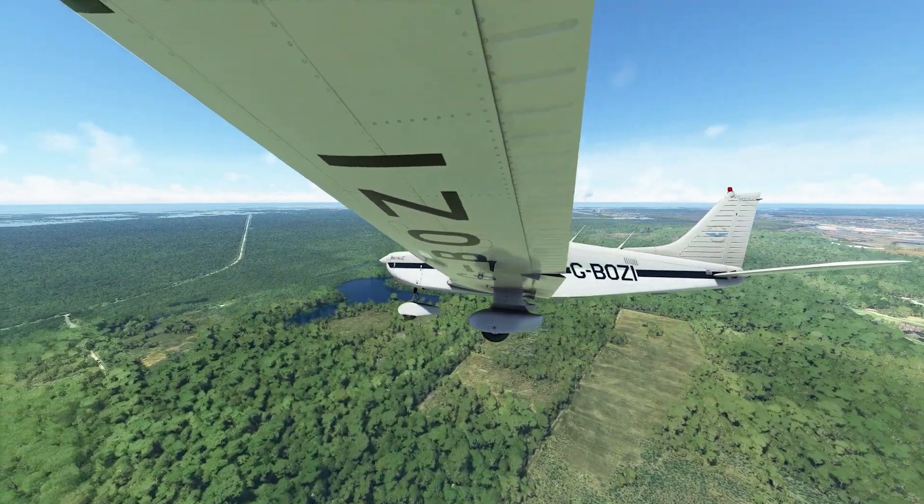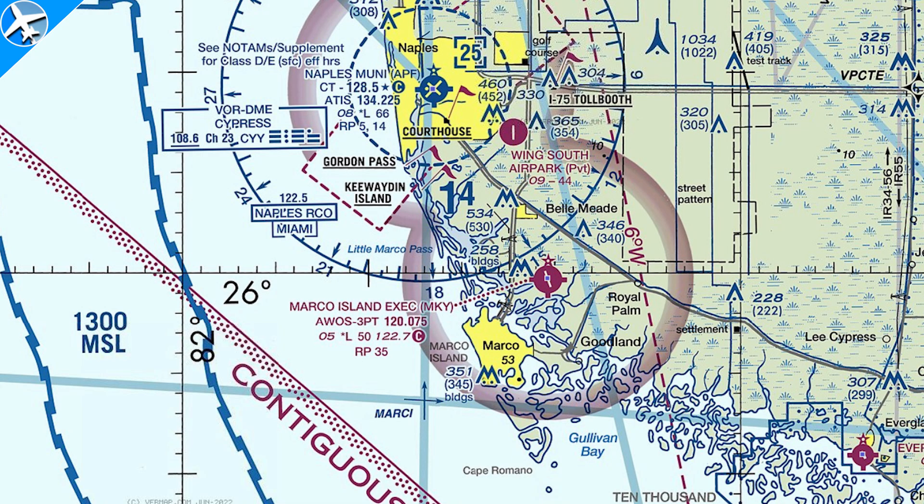The previous video on airport traffic patterns briefly touched on radio communications. The communications you're going to see in this video would be broadcast over a CTAF, or Common Traffic Advisory Frequency. In this case, the frequency would be 122.7, which can be found on a sectional chart.